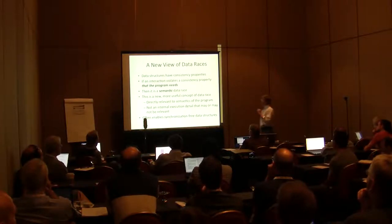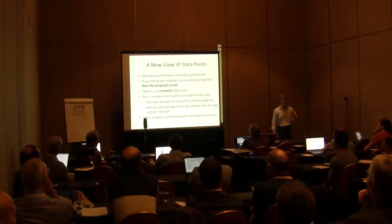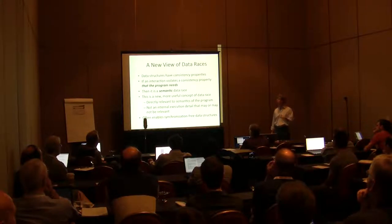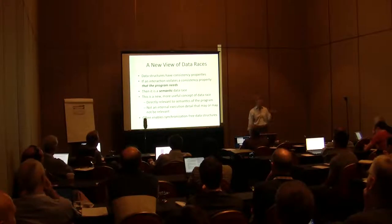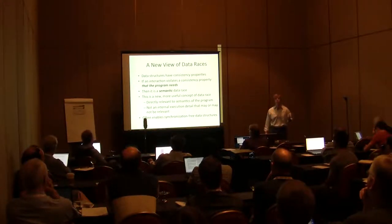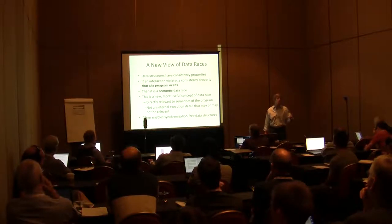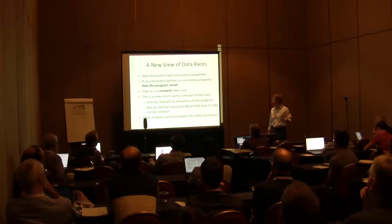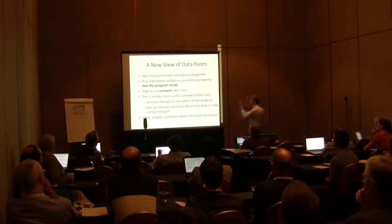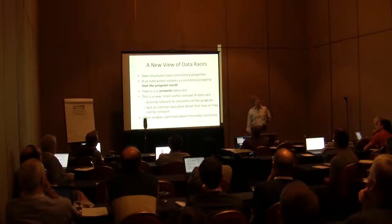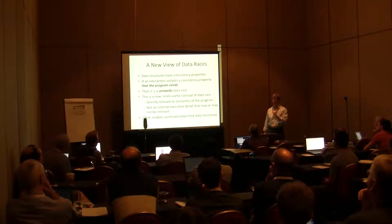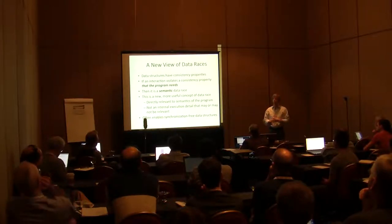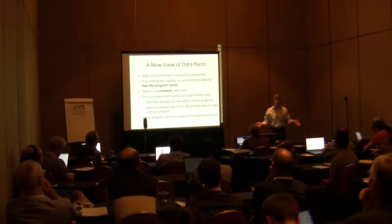I'm going to propose a new view of data structures. I'm going to say data structures have consistency properties. If an interaction violates a consistency property that the program needs, I'll call it a semantic data race. This is a new and more useful concept because it's directly relevant to the program, not to some potentially irrelevant internal detail of the execution that may or may not affect anything. This enables you to consider the semantics of the program in a broader context and come up with a much broader range of data structures.